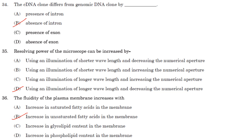Resolving power of a microscope can be increased using the formula 0.61λ/NA, where λ is wavelength and NA is the numerical aperture. When you increase the wavelength, resolving power increases, and when you decrease the numerical aperture, resolving power increases. The answer is option D: using illumination of longer wavelength and decreasing the numerical aperture.